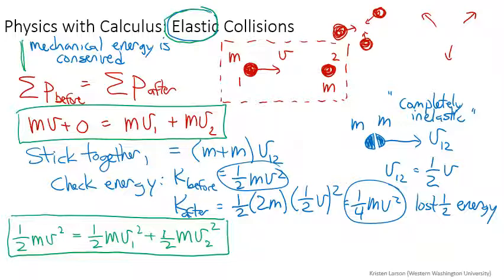You get one of two equations: either they don't hit and number two just sits there and number one sails on through, but the other one is that number one sits there and v1 final is equal to zero. Number two after the collision heads off with the speed that v1 had to begin with, v2 is just v.